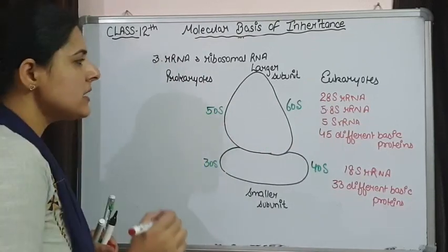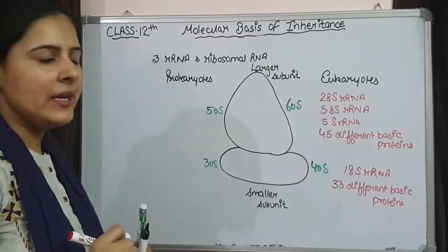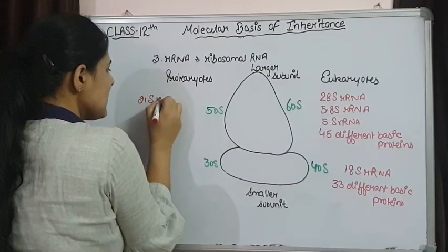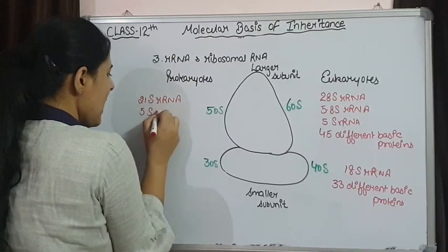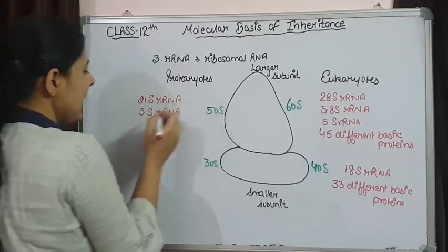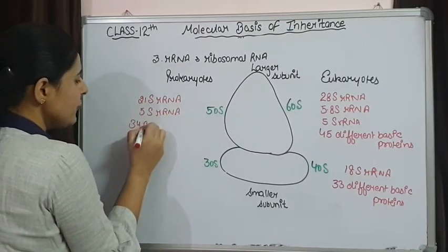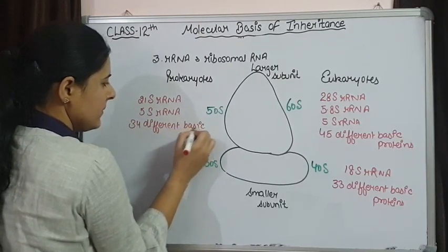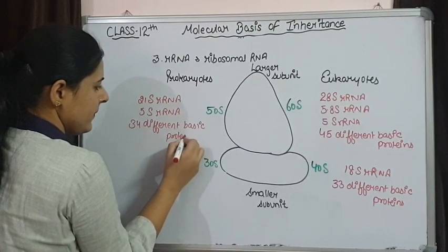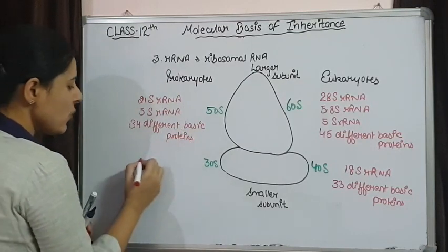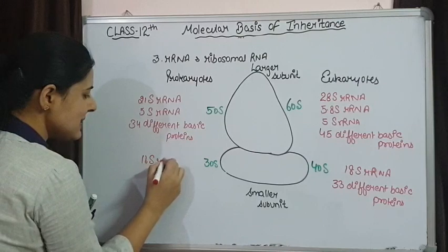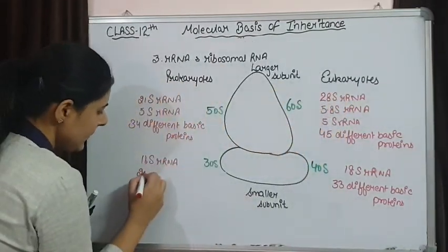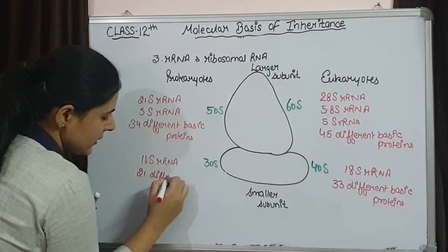Different rRNA and proteins are associated with these larger and smaller subunits. If we talk about the 60S subunit of eukaryotes, it is having 28S rRNA, 5.8S rRNA, and 5S rRNA associated with 45 different basic proteins. These different proteins are associated with these rRNA to make the larger subunit. The 40S subunit is having 18S rRNA and it is associated with 33 different basic proteins. In prokaryotes, the smaller subunit is having 16S rRNA and it is associated with 21 different basic proteins.